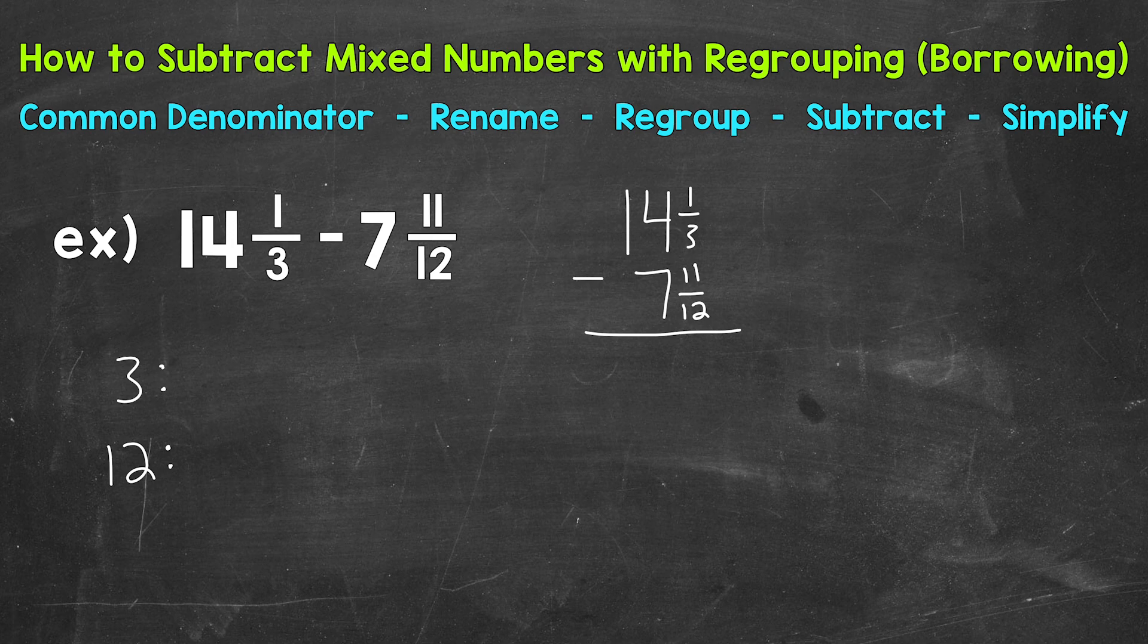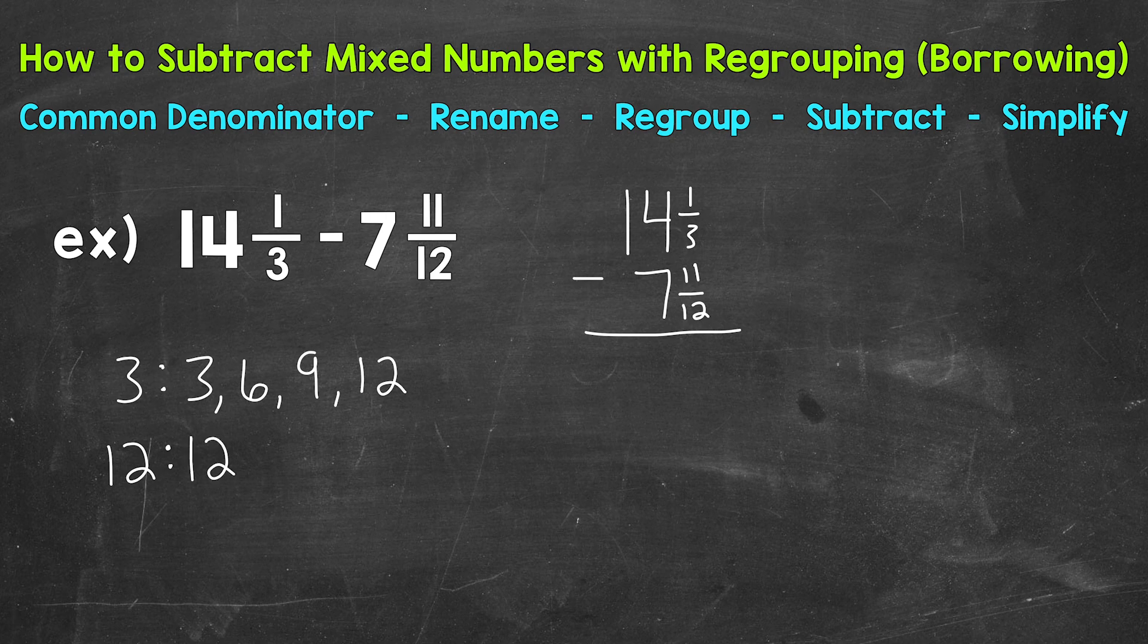So let's start with 3. So 3, 6, 9, 12. So we'll do 4 multiples of 3, and then 4 multiples of 12. The first multiple of 12 is 12. And you may notice we have something in common. 12 here. And that is going to be our least common multiple.